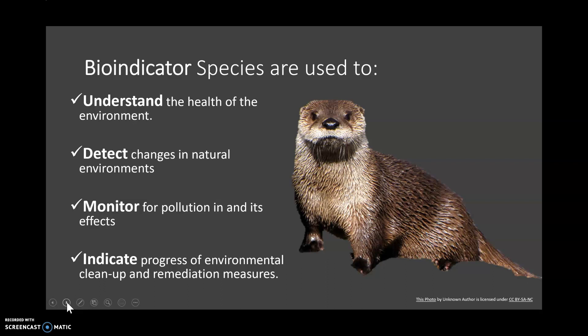Peregrine falcons are one of the classic examples. They were in big decline because of pesticides — DDT being used as an insecticide on crops, which fed up through the food chain into the birds. When the birds laid eggs, the shells were very fragile and the birds began to decline because they were breaking their own eggs. It took a long time to figure out that they were indicating the level of that pollutant in the environment.